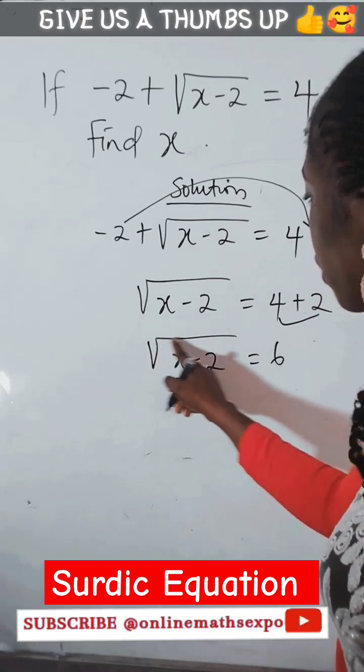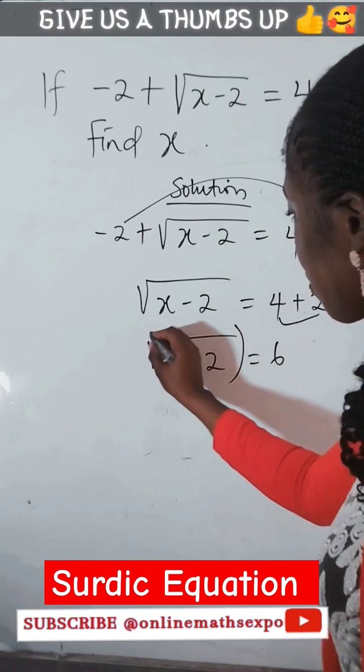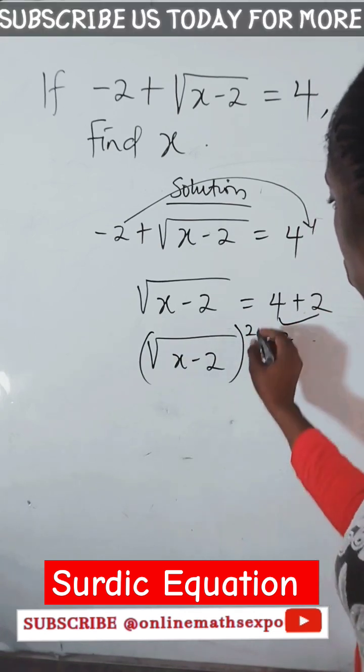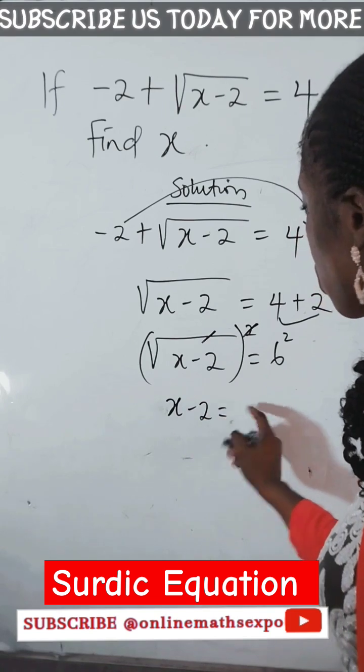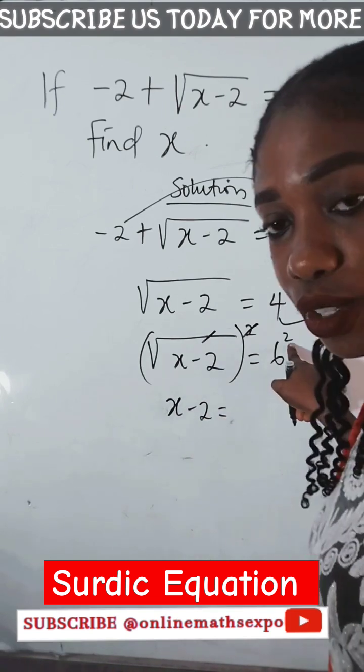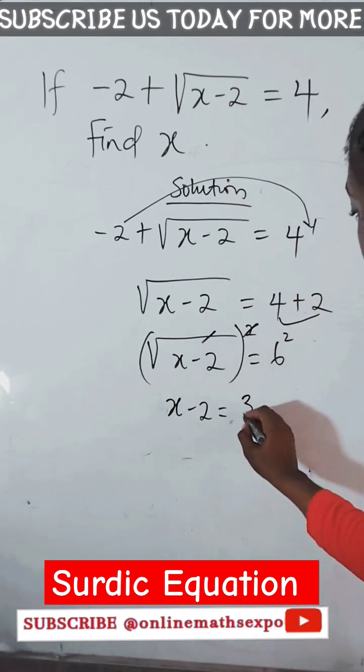So to find x, we need to remove the radical sign. We do that by squaring both sides. This will cancel the root. We have x - 2 = 6², which is 6 × 6 = 36.